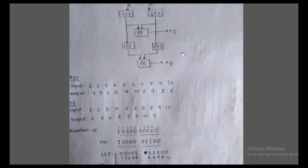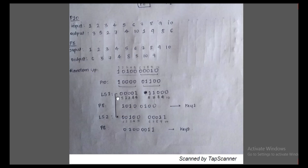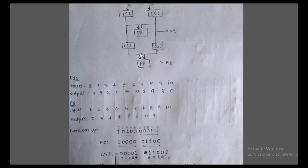After generating Key 1, we find LS2. LS2 is derived from LS1 and means left shift by two positions. Shifting by two positions gives us: zero, zero, zero, one, zero, zero, zero for the first half, and zero, zero, zero, zero, one, one for the second half. This is the LS2 output.